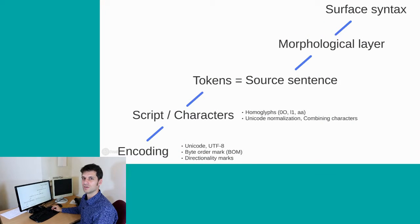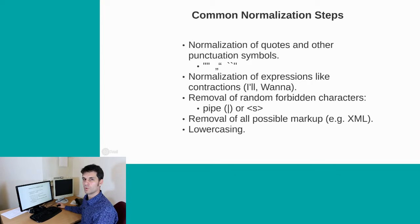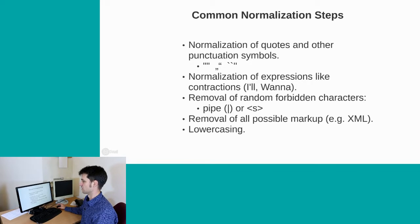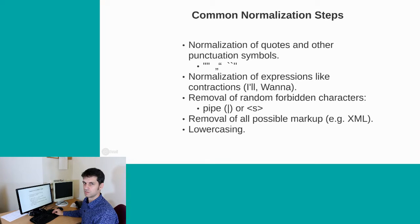So that was tokenization. Further common normalization steps include normalization of quotation marks or expressions like 'I'll', 'wanna', and other contractions. It is also very wise to remove any characters that would negatively interact with the rest of the processing pipeline, such as the pipe character, the start-sentence symbol, or other markups such as XML. What people also often do is lowercasing, so all the differences between small and large characters are neglected. There are obviously examples where this is hard — for example, 'Rice University' is not the 'University of Rice'.